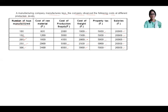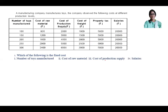There are five parts to this question. First: which of the following is the fixed cost? Option one: number of toys manufactured. Option two: cost of raw materials. Option three: cost of production supply. Option four: salaries. Going one by one — toys manufactured is not fixed. Cost of raw materials is also changing, not fixed. Cost of production supply is also not constant. Salaries is constant, so salaries is the answer.